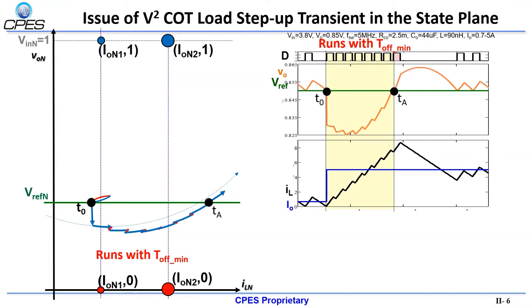During this time period, a large undershoot can occur. Afterwards, a long off-time trajectory intersects v-reference at Tb, where v-square constant on-time control is recovered. Finally, the trajectory travels along v-reference to the new steady state.